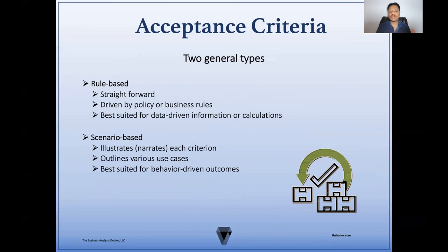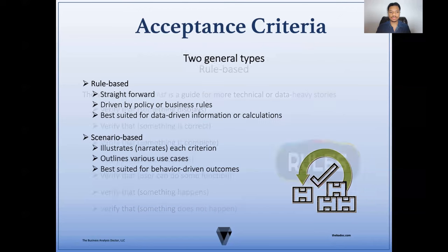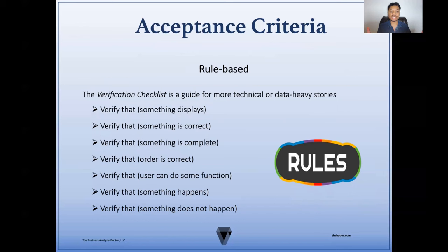Rule-based acceptance criteria are much more straightforward. They're driven by policy or business rules, and they're best suited for data-driven information or calculations. Scenario-based acceptance criteria usually illustrates or narrates each criterion and outlines various use cases. It's typically best suited for behavior-driven outcomes. For the rule-based verification checklist, this is a guide for the more technical or data-heavy stories — usually verifying that something displays, that something is correct, that something is complete, that the order is correct, verifying that a user can do some function, or that something happens or does not happen.